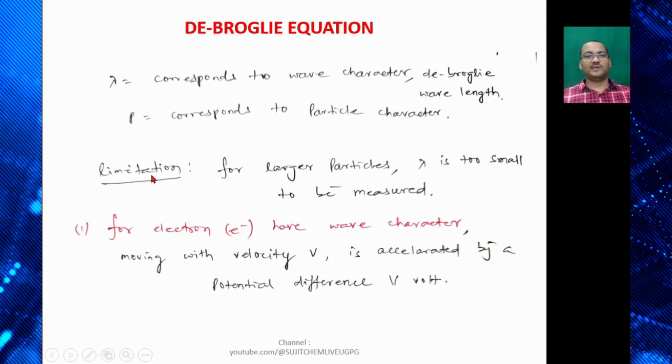Where λ corresponds to wave character that is de Broglie wavelength and P corresponds to particle character. So what is its limitation? For larger particles, λ is too small to be measured. Second, for electrons have a wave character.